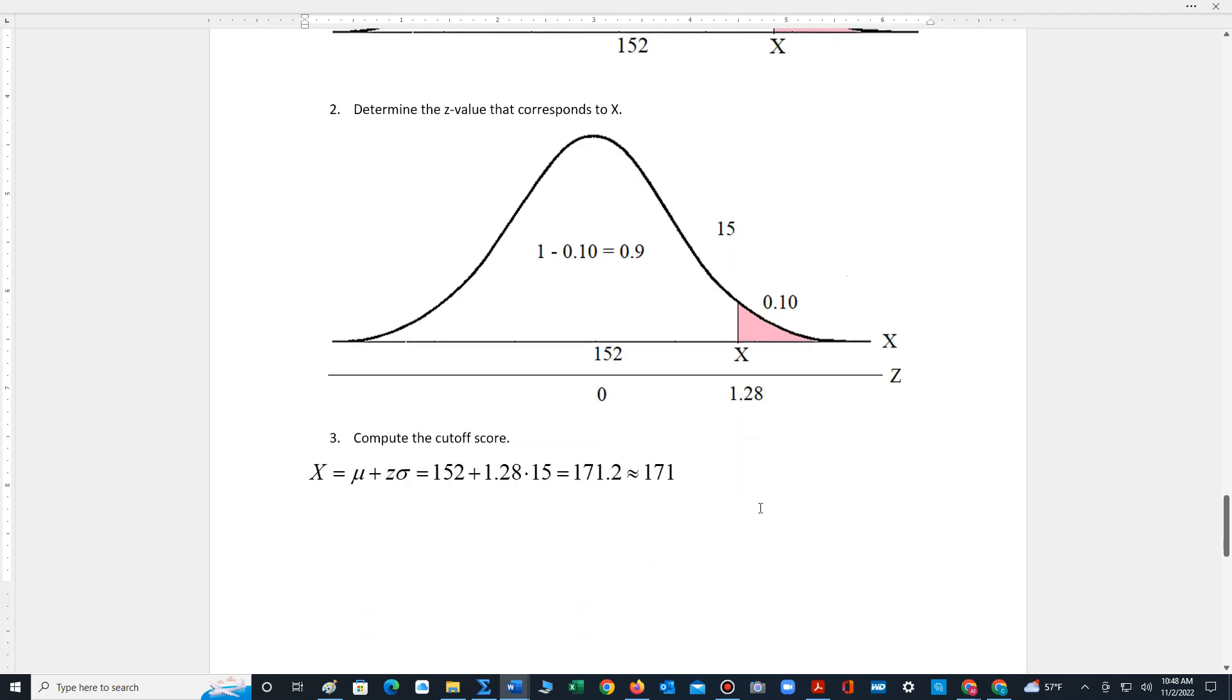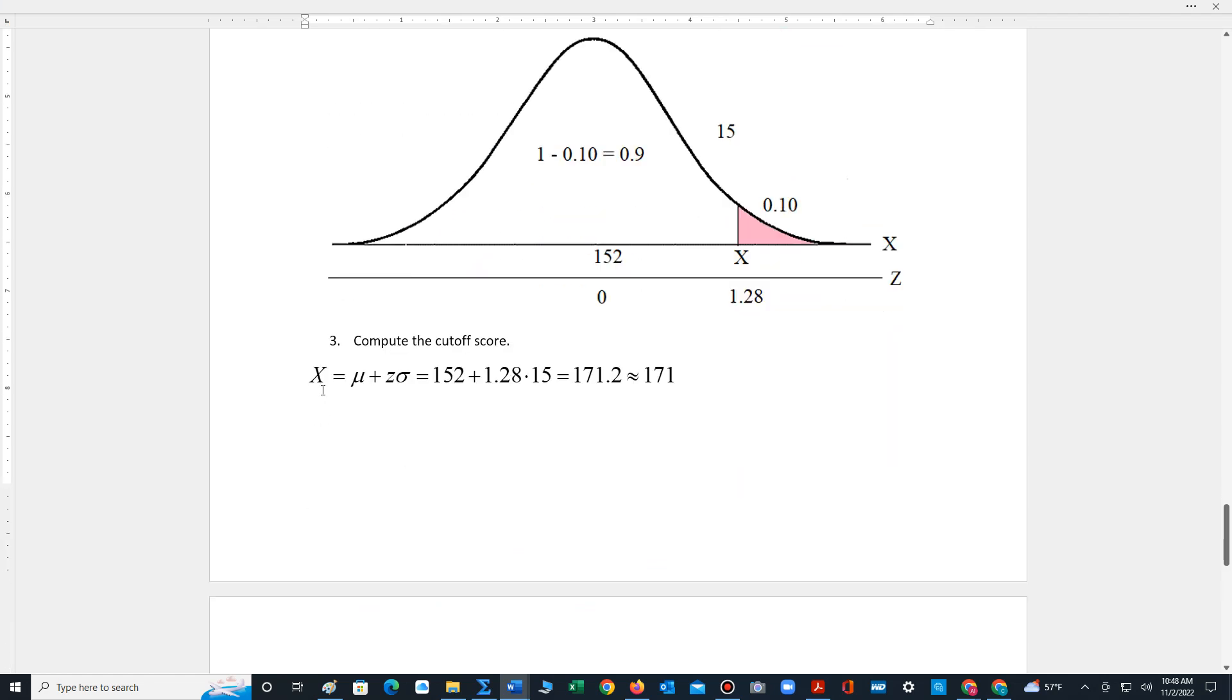And then we can compute the cutoff score. Using the cutoff score formula, X is mu plus Z sigma. Mu is 152, Z is 1.28, the standard deviation is 15. We end up with 171.2. And we round, as stated in the problem, to 171. So that is the minimum cutoff score to be in the top 10%.